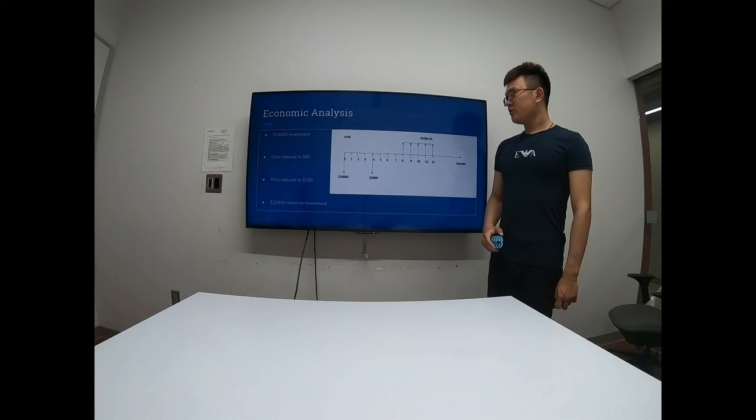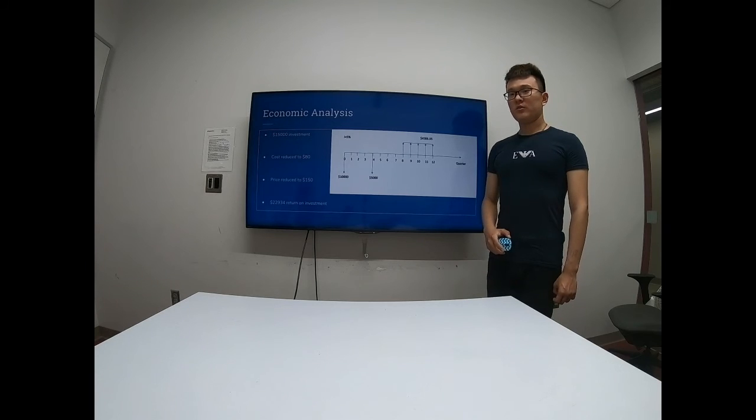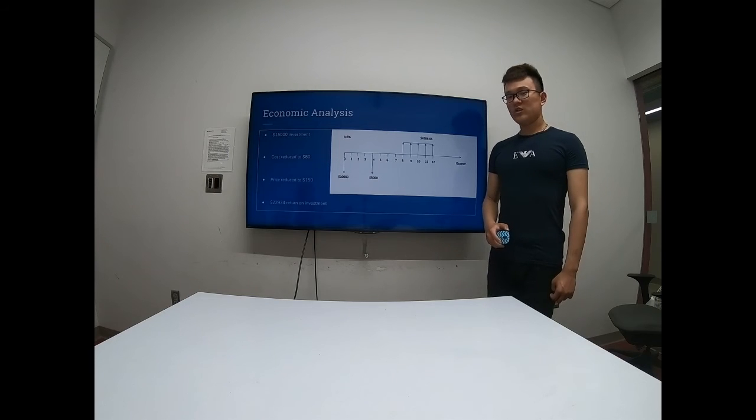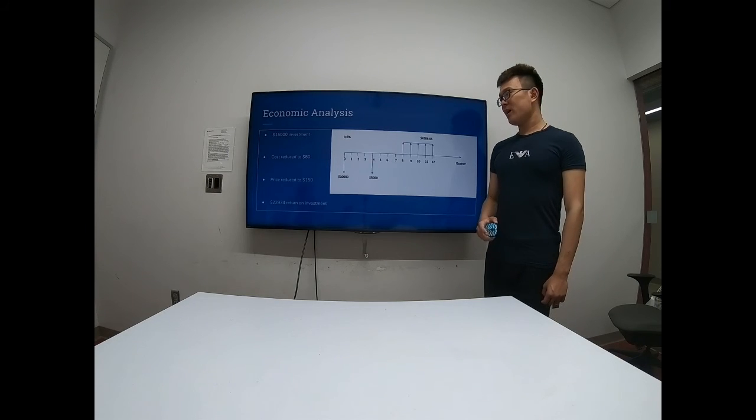We assumed the annual interest was 5% and we are going to start our production at the first year. Especially, we are going to start our systematic production at the beginning of the second year. And we need an additional $5,000 to ramp our production.